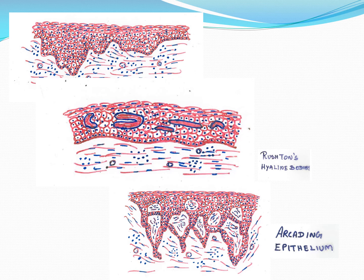In the third diagram, the epithelium is more hyperplastic. As the epithelium grows rapidly, it entraps the connective tissue within it. We can see rings of connective tissue within the epithelium — this pattern is called the arcading epithelium or arcading pattern. 'Arcade' means ring. When the epithelium rapidly proliferates in multiple directions, it encloses connective tissue, which microscopically appears as rings of connective tissue within the epithelium.